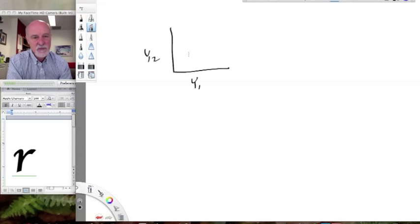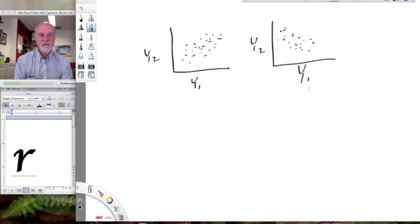We might get a result like this, or we might get a result like this. And we look at correlation and we say aha, y1 and y2 are positively correlated. y1 here and y2 here are negatively correlated.